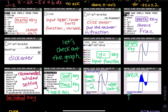Once you hit enter, you will see the last screenshot. They will shade the area for you and tell you that the area is 10.41667. The downside of this method is they won't give you the fraction — to get the fraction, you have to use the FNINT method on the home screen.